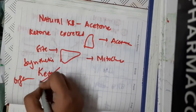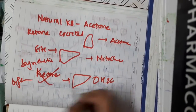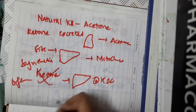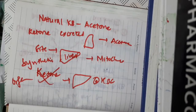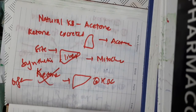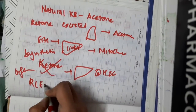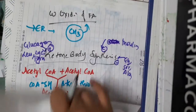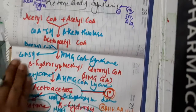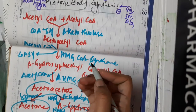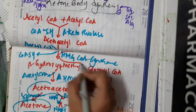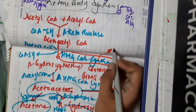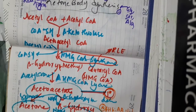Organs which do not utilize ketone bodies are the liver and RBC. The liver synthesizes ketone bodies but does not utilize them. The rate-limiting enzyme in ketone body synthesis is HMG-CoA synthase.